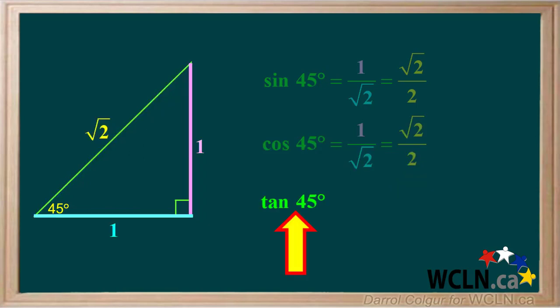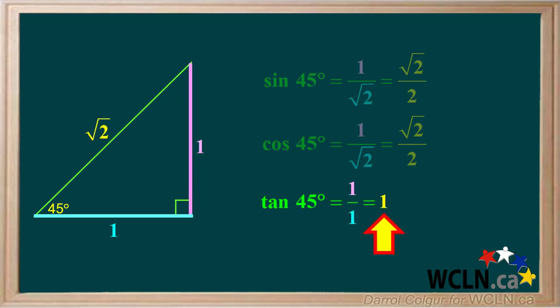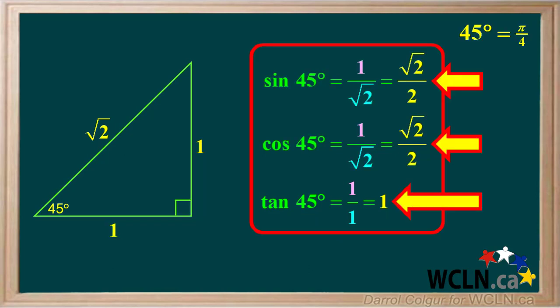The tangent of 45 degrees is the opposite side over the adjacent side, which is 1 over 1, or 1. So the exact tangent of 45 degrees is 1. To summarize, these are the exact values for the sine, cosine, and tangent of 45 degrees, or pi over 4 radians.